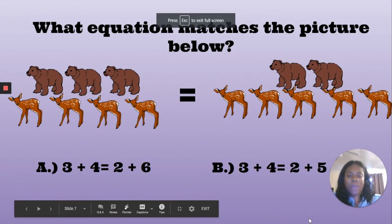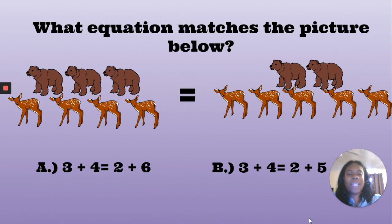Number three, what equation matches the picture below? There are three bears and four deer on one side, so that equation should be 3 plus 4. And on the other side of the equation, there are two bears and five deer. That equation should have been 2 plus 5. And so, the equation that matches the picture below should be B. 3 plus 4 equals 2 plus 5.